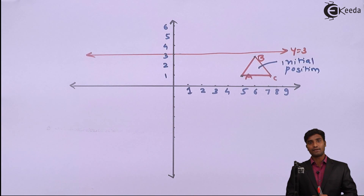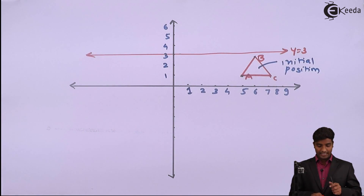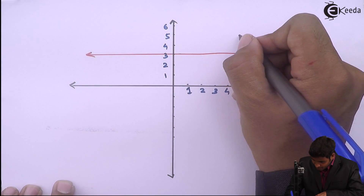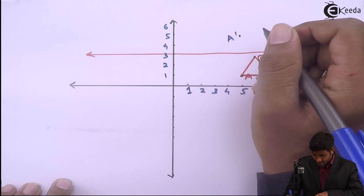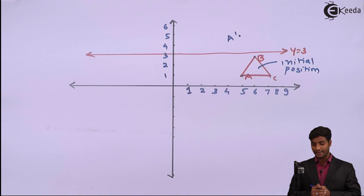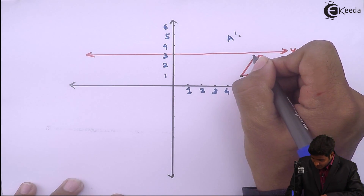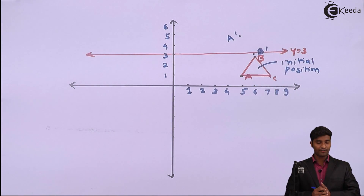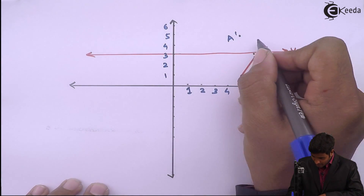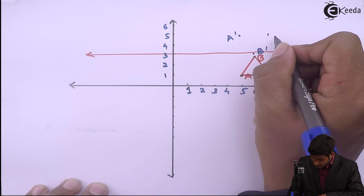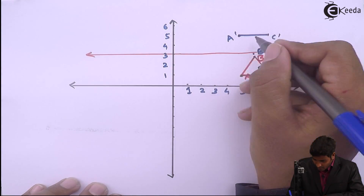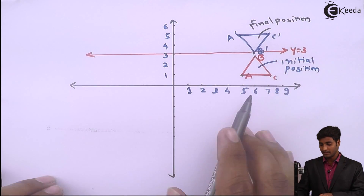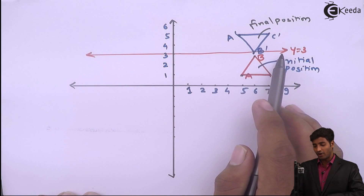Now plotting the final positions A', B', and C'. A' is at (5,5), B' is at (6,3), and C' is at (7,5). Joining all these points gives the reflected triangle. This is the final position — the triangle has been successfully reflected about the line y equals 3. Thank you.